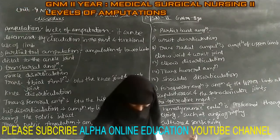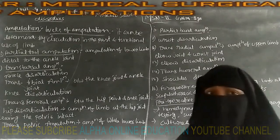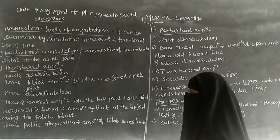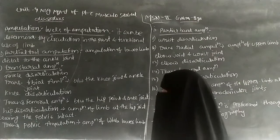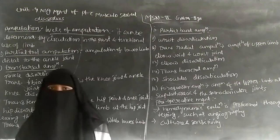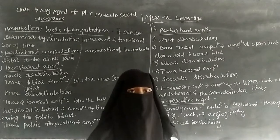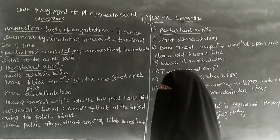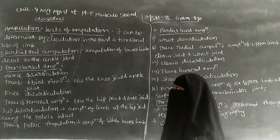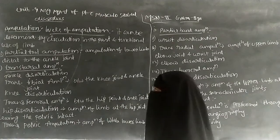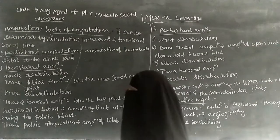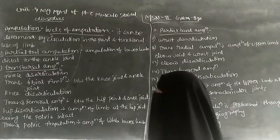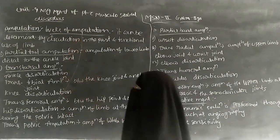Hi everyone, today I am going to discuss medical surgical nursing for GNM second years — Unit 9: nursing management of patients with musculoskeletal disorders. In the last class we covered amputation Part 1, and today is Part 2. Up to the types and diagnostic evaluation we covered in Part 1, and in Part 2 we are going to discuss the levels of amputation.